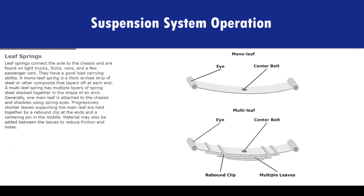Leaf springs connect the axle to the chassis and are found on light trucks, SUVs, vans, and a few passenger cars. They have a good load-carrying ability. A monoleaf spring is a thick arched strip of steel or other composite that tapers off at each end. A multi-leaf spring has multiple layers of spring steel stacked together in the shape of an arch. One main leaf is attached to the chassis and shackles using spring eyes, with progressively shorter leaves supporting the main leaf, held together by a rebound clip at the ends and a centering pin in the middle. Material may also be added between the leaves to reduce friction and noise.